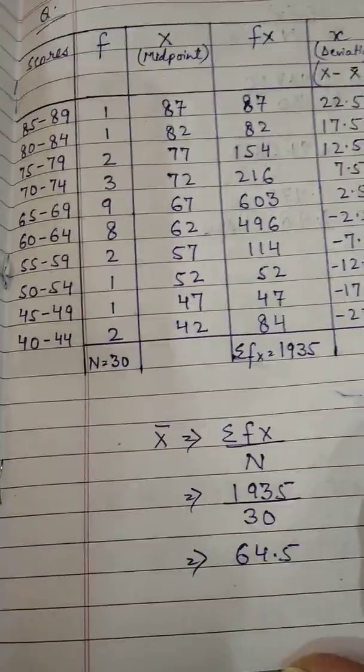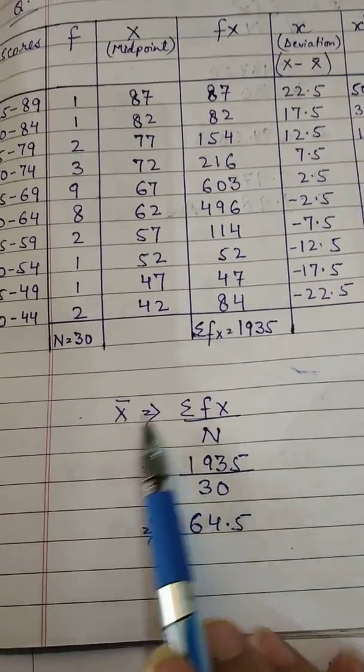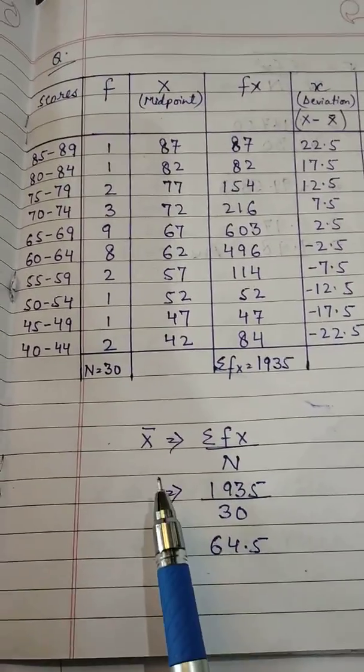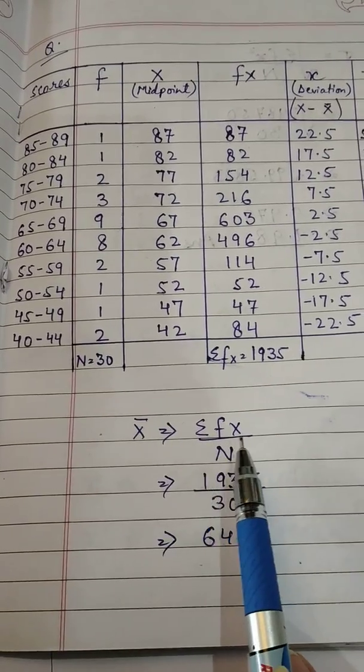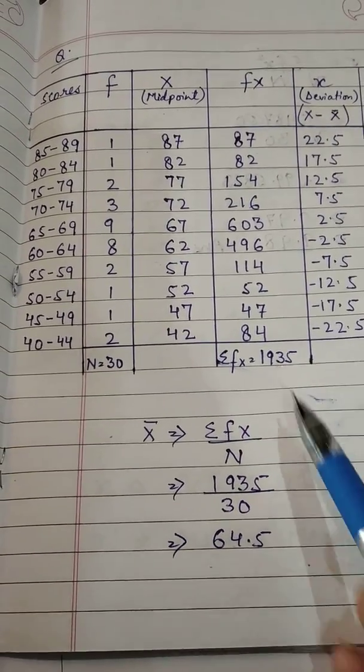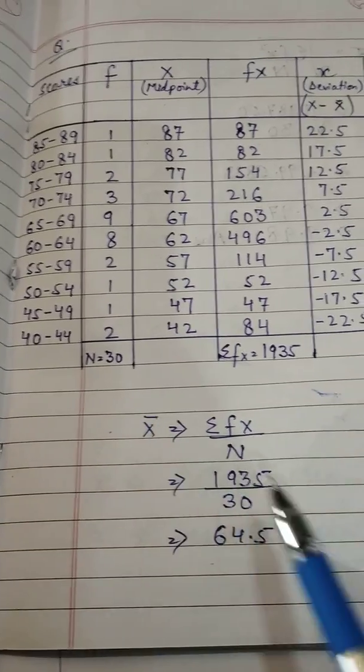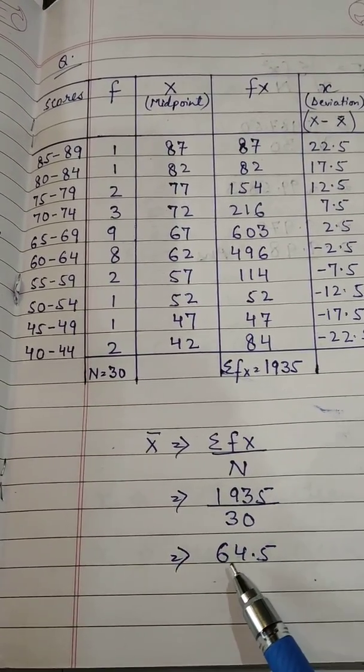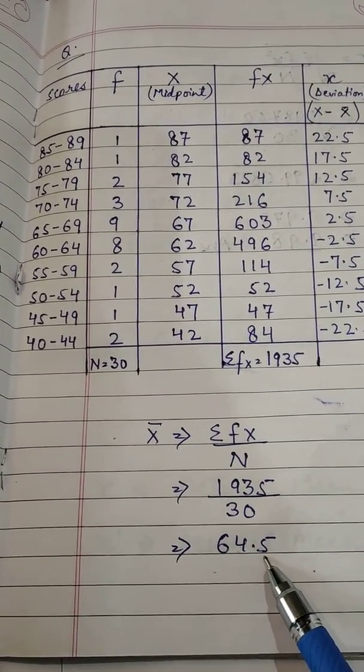Aap yahaan par kya karayenge. You will calculate this mean. Is particular group ka. Toh mean ka aapko formula pata hai. Sigma fx upon n. Yeh aapka fx aya hua hai. Divided by n. N is 30. Toh yeh aapka aagya hai 64.5.